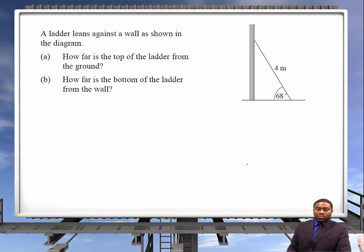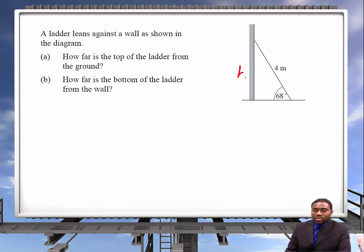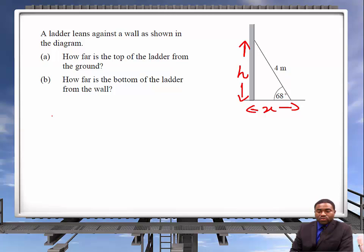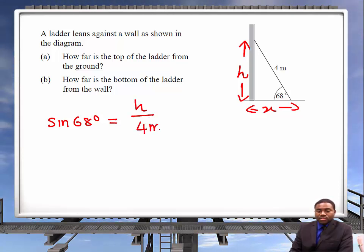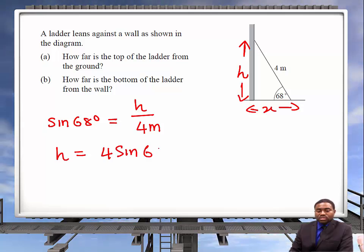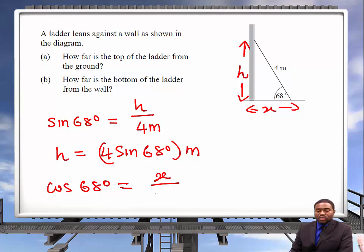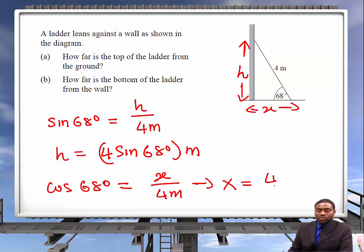A ladder leans against a wall. How far is the top of the ladder from the ground, and how far is the bottom of the ladder from the wall? We know the hypotenuse is 4 meters. The sine of 68 degrees equals the opposite h divided by 4 meters, so h equals 4 sine 68 meters. Similarly, cosine of 68 degrees equals the adjacent over the hypotenuse, so x equals 4 cosine 68 meters.